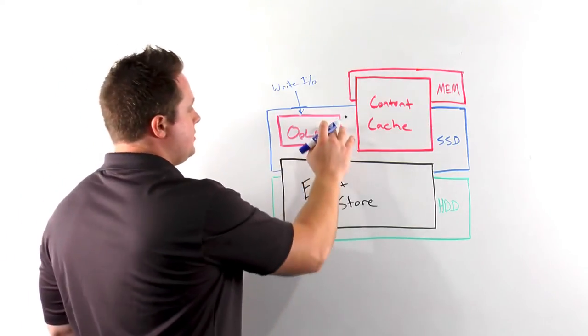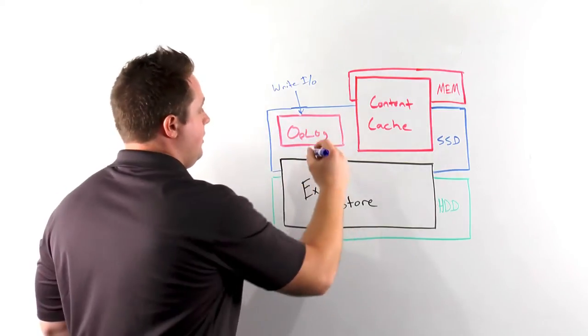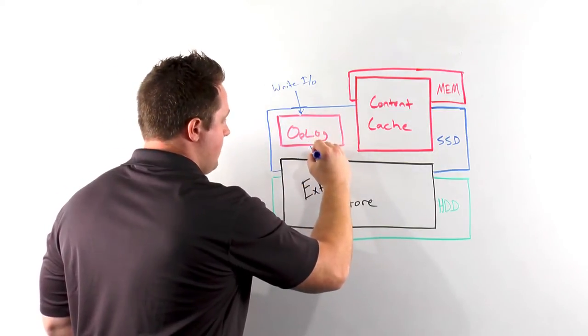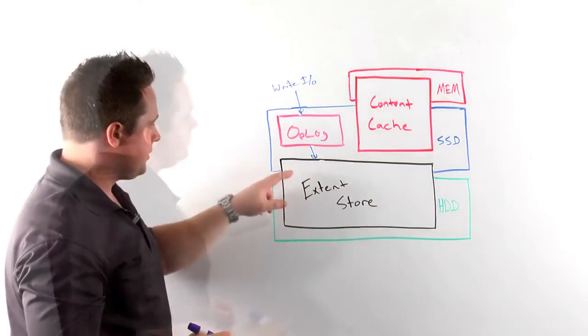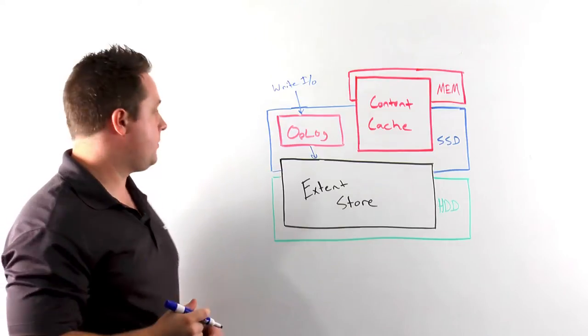The oplog allows us to take bursts of random writes, coalesce them, and then sequentially drain them back into our extent store. Our extent store spans both SSD and HDD and is our persistent storage tier.